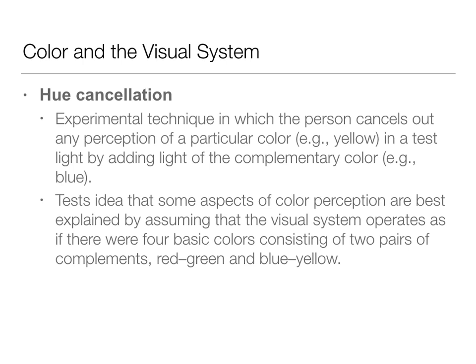Both trichromatic theory and opponent process theory are well-supported with evidence, and both of these things work in conjunction to give us our color perception. This ends the lecture on opponent processing theory. Thanks.